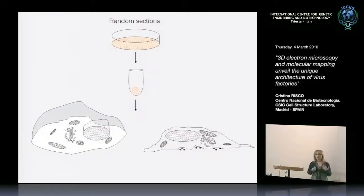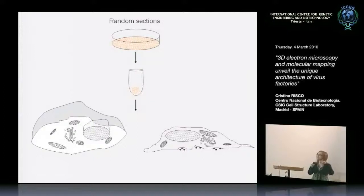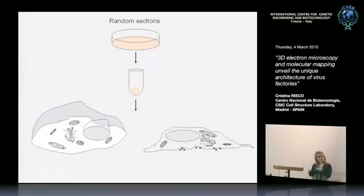We had cylinders in the organelles that construct the factory, but to know more about how this could be working we wanted to understand the structure in three dimensions — how all the elements of the factory come together. For that, we had to make a transition from the traditional way of looking at cells by electron microscopy, which is random sectioning. Usually we fix cells, make a pellet embedded in plastic resin, section to 50 nanometers, and bring it to the electron microscope.